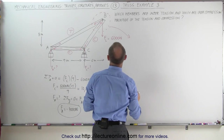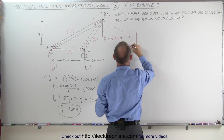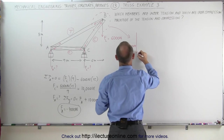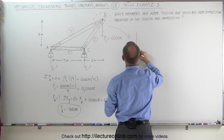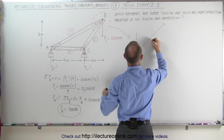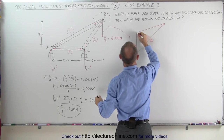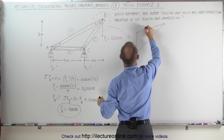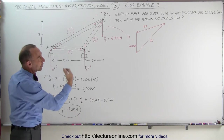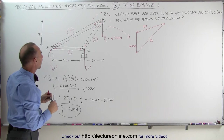Let's take a look at this joint first. When we draw the triangle, we get the 6,000 Newton force coming down, a force acting toward B to C in this direction, and the force from B to A in this direction. Notice what we are missing, however, is the angles. So we don't know yet what the angles are of this particular triangle. Let's go ahead and try to find those.